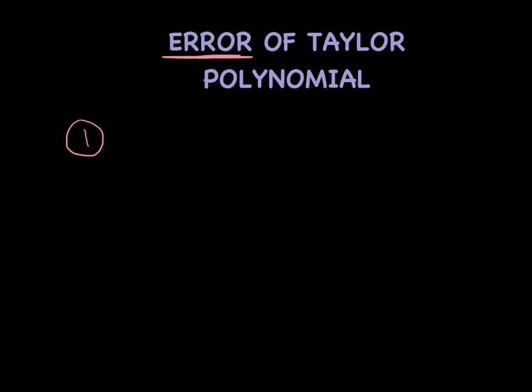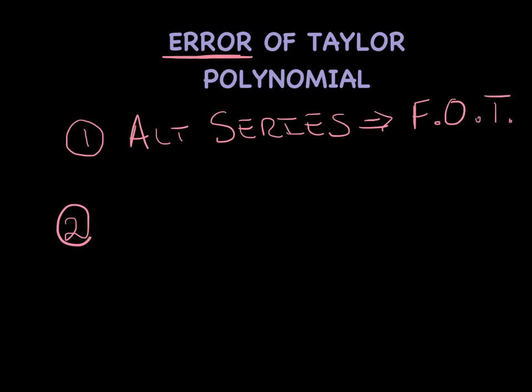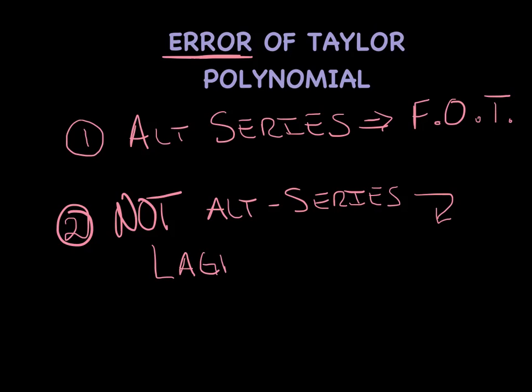Basically there's two types of approaches. Number one, when you see the word error, you just keep your fingers crossed and hope it's an alternating series. As long as it's alternating series, we're going to focus on the first omitted term. The alternative, if it's not an alternating series, we're going to use Lagrange's theorem, which is very closely associated with the idea of the first omitted term.